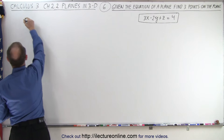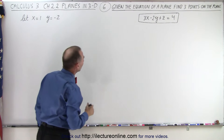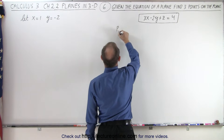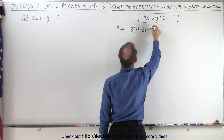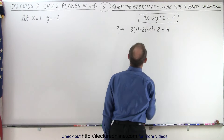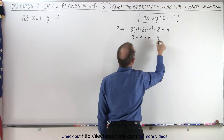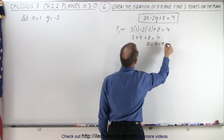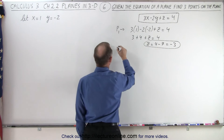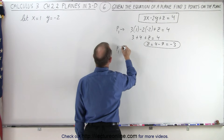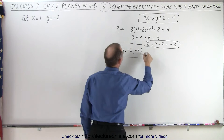Let's start by letting x equals 1 and y equals negative 2 to find our first point. So to find point 1, we do 3 times x (which is 1) minus 2 times y (which is negative 2) plus z equals 4. That gives us 3 plus 4 plus z equals 4, so z equals 4 minus 7, which is negative 3. Since z equals negative 3, point 1 is (1, -2, -3).